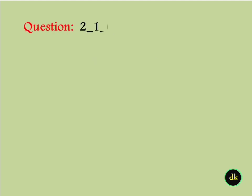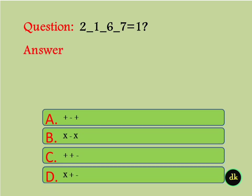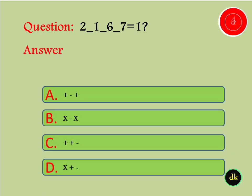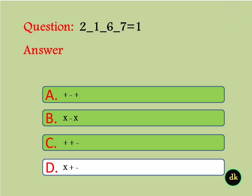Fill the series: 2 dash 1 dash 6 dash 7 is equal to 1. The answer is 2 into 1 plus 6 minus 7 is equal to 1.